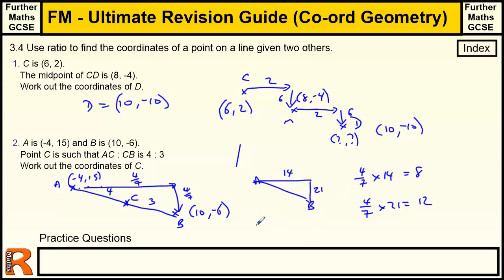So we're going to cross 8 and down 12. So we're going to cross 8. So our x-coordinate is going to be -4 plus 8, which is going to be 4. And our y-coordinate is going to be 15. And we're coming down 12. So we're going to take away 12, which is 3. So our coordinate for C is going to be (4, 3).